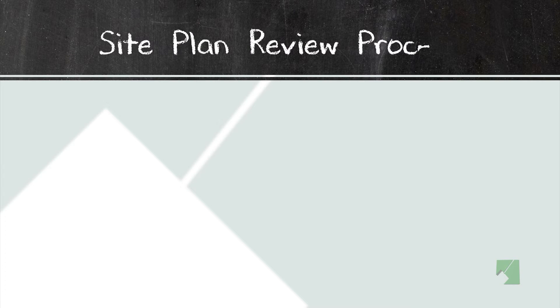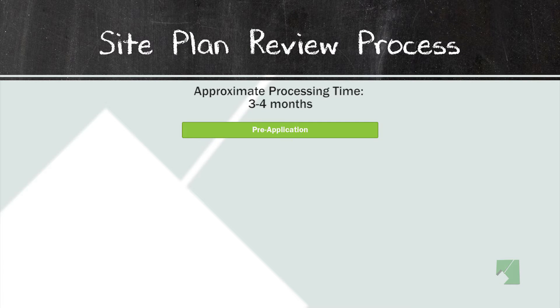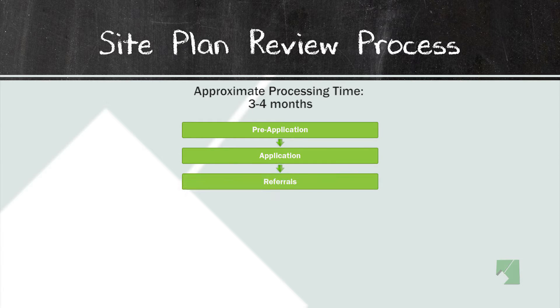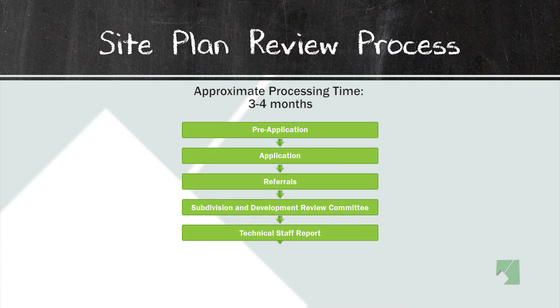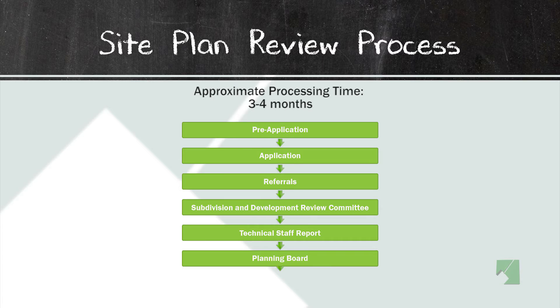The site plan review process normally takes three to four months to go through the review and referral process. Once the planning board approves or denies the site plan, an appeal can be taken to the district council and then to circuit court. The three to four month timeframe only involves the planning department and planning board's process; if the case is appealed, it could be an additional period of time.